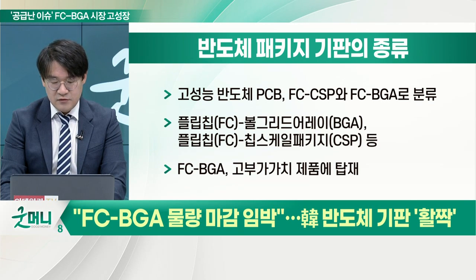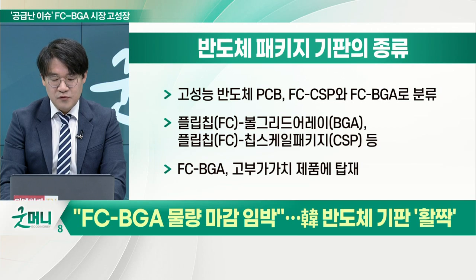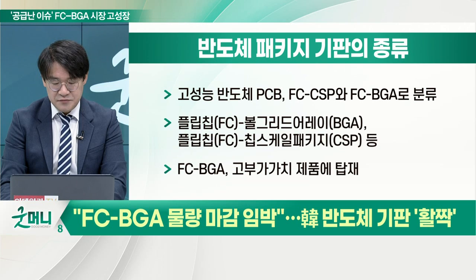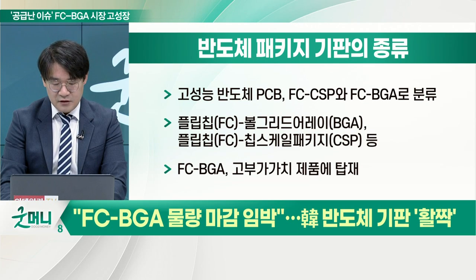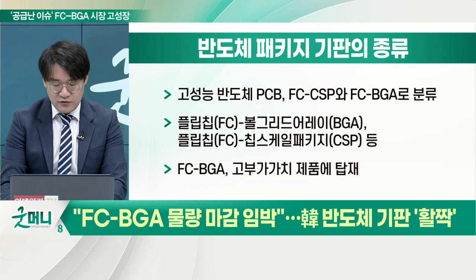FCCSP는 칩과 기판의 크기가 딱 맞아서 같습니다. 그렇기 때문에 면적을 많이 차지하지 않아 스마트폰 같은 모바일 기기에 주로 적용됩니다. FCBGA(플립칩 볼 그리드 어레이)는 칩보다 기판의 크기가 훨씬 크기 때문에 모바일 기기에는 들어가기 힘들고, 서버, 노트북, 자동차 전장 분야에 사용됩니다.